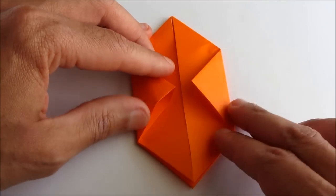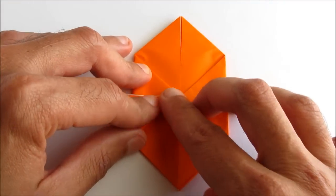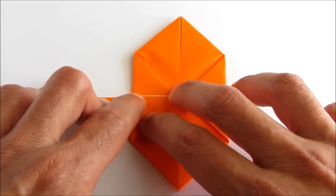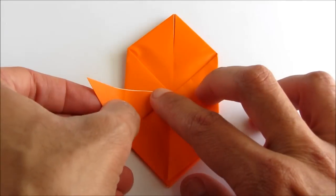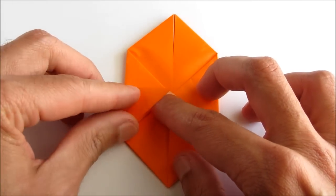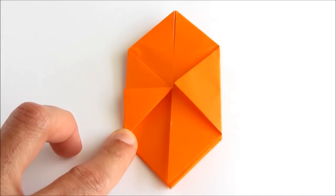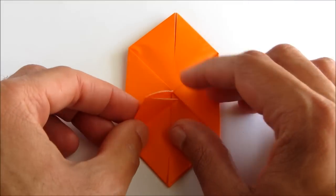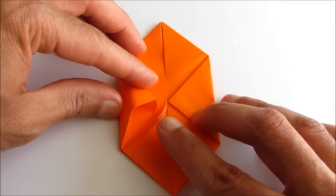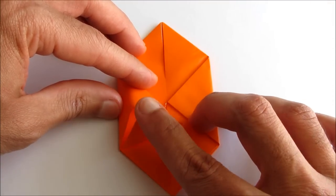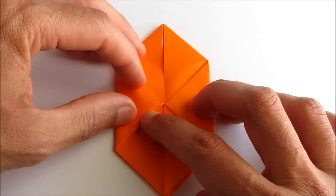First, fold the flap onto itself by folding it to the left like this, then back on itself. Now take that double flap and tuck it into that pocket. It should fit perfectly, nice and snug.